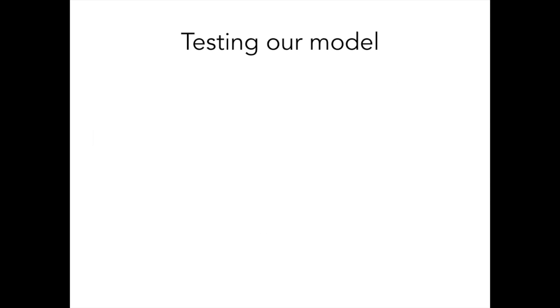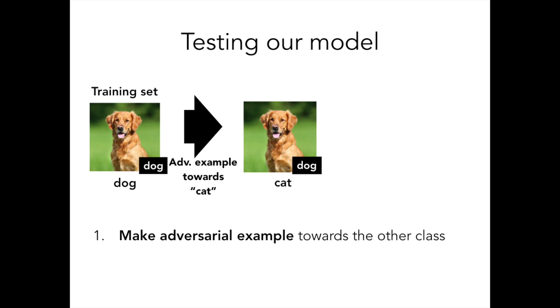With this model in mind, let's try an experiment. We'll start with the training set of a standard image classification task. We'll then take a pre-trained classifier for this dataset and make an adversarial example for every training image. After we make these adversarial examples, we'll label every image with its adversarial class.